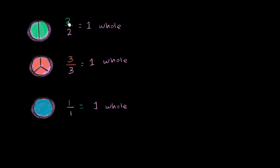And I think you see a pattern here. Two halves, 3 thirds, or one over one, these all represent the exact same value. They all represent a whole.